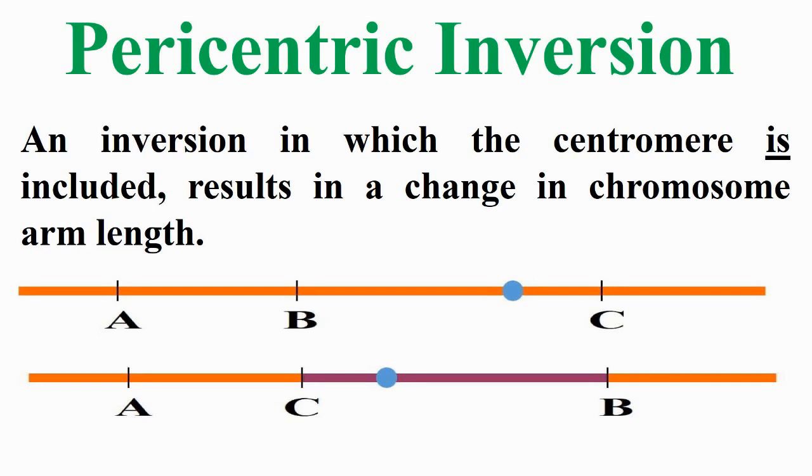Pericentric inversion is an inversion in which the centromere is included, resulting in a change in chromosome arm length, as viewed in the figure inside the slide.